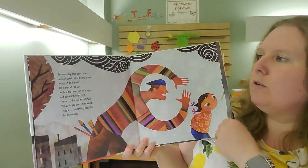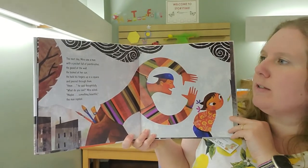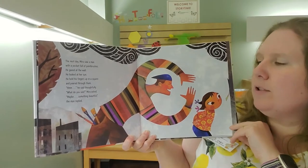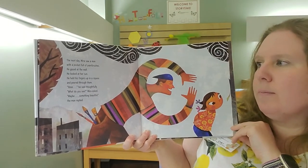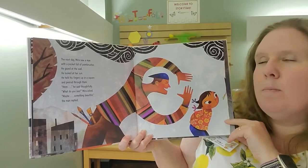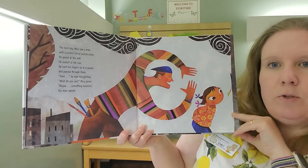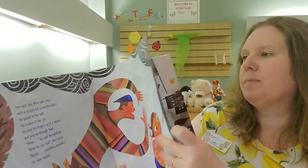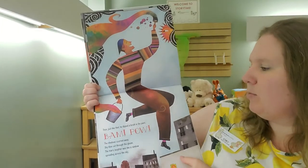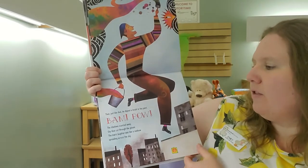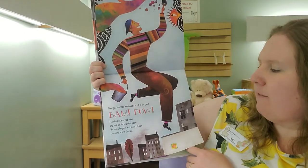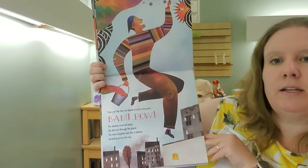The next day, Mira saw a man with a pocket full of paintbrushes. He gazed at the wall. He looked at her sun. He held his fingers up in a square and peered through them. Hmm, he said thoughtfully. What do you see? Mira asked. Maybe something beautiful, the man replied. Then, just like that, he dipped a brush in the paint. Bam! Pow! The shadows scurried away. Sky blue cut through the gloom. The man's laughter was like a rainbow spreading across the sky.